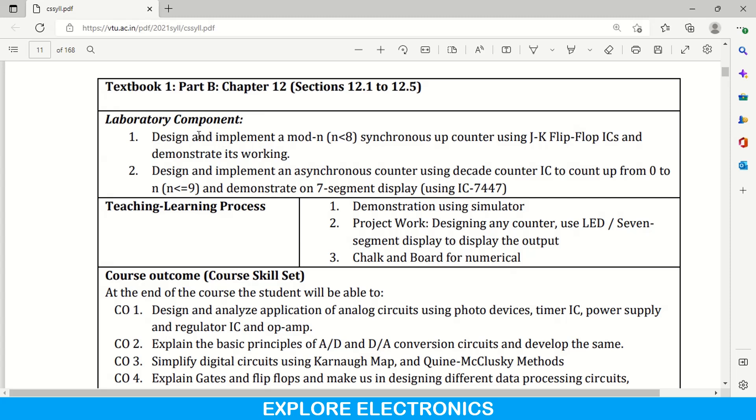Coming to laboratory component, here mod N counter design is given using JK flip-flop IC and we need to demonstrate its work by designing this mod N counter. And design and implement asynchronous counter using decade counter IC, a particular IC they have given here. We need to take that IC and design asynchronous counter which is counting from 0 to N that is N is less than equal to 9 and demonstrate on 7 segment display. We need to display that count using 7 segment display. Here we need to use ICs in lab.